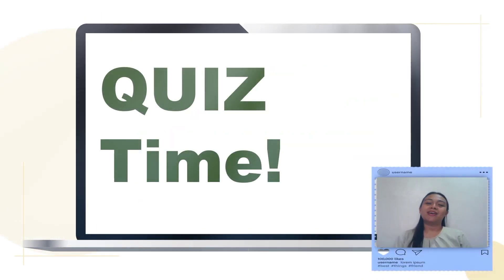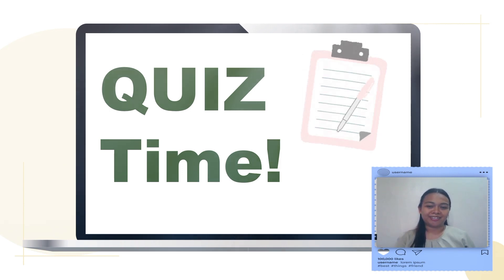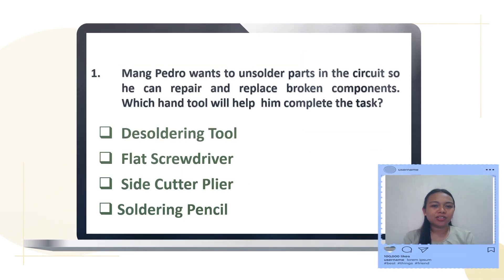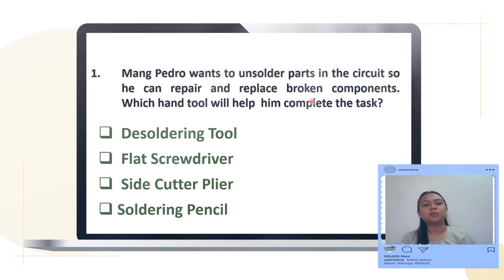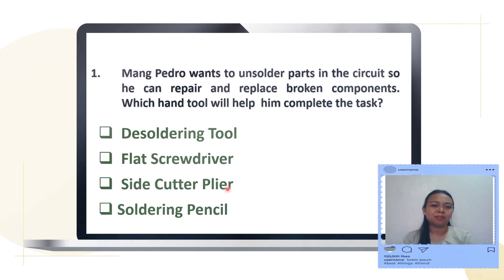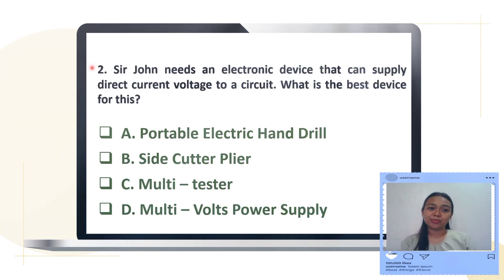It's quiz time! Get ready with your pen. Question number one: Mang Pedro wants to unsolder parts in the circuit so he can repair and replace broken components. Which hand tool will help him complete the task — soldering tool, flat screwdriver, side cutter plier, or soldering pencil? The correct answer is the soldering tool.